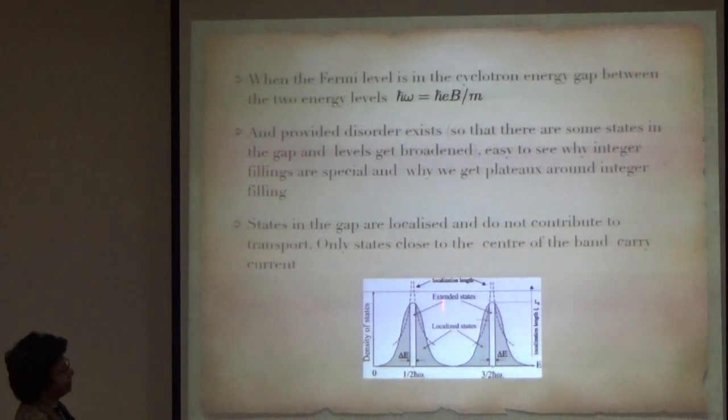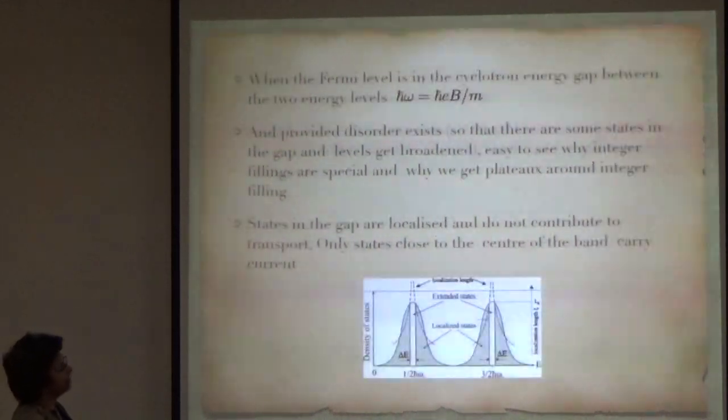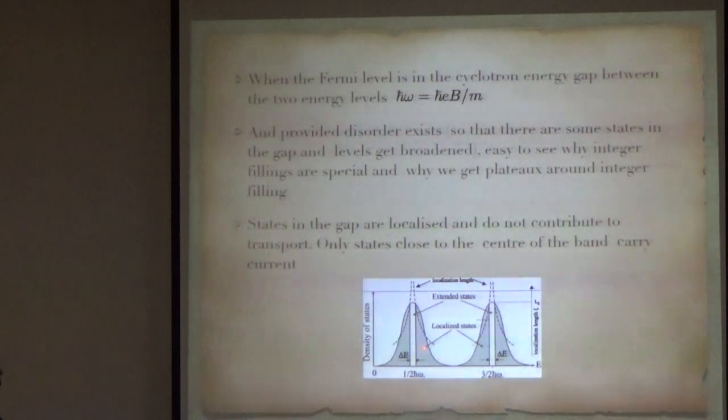When the Fermi level is in the gap between Landau levels, as I have just plotted it schematically, if you have disorder, then these levels are broadened, so that you expect these states to be localized, and you have extended states in the middle.